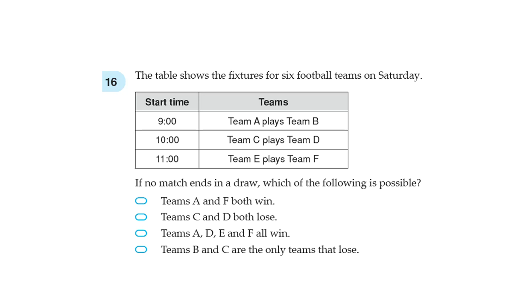If no match ends in a draw, which of the following is possible? So let's rule them out one at a time. So A and F both win. Yep, that's possible. A could beat B and F could beat E.